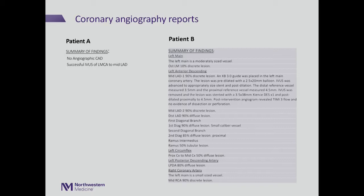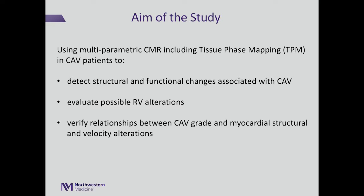The aim of our study was to use multiparametric CMR, particularly including tissue phase mapping for quantifying myocardial velocities in systole and diastole, to detect structural and functional changes associated with CAV, to evaluate possible RV alteration — the right ventricle being the most forgotten chamber in many pathologies including post-transplant follow-up — and to verify any relationship between CAV grade and myocardial structure and velocity alterations.